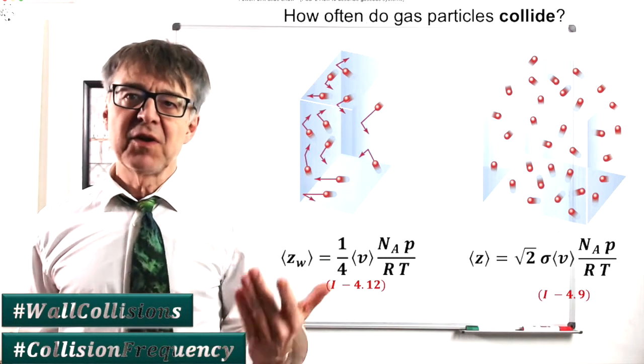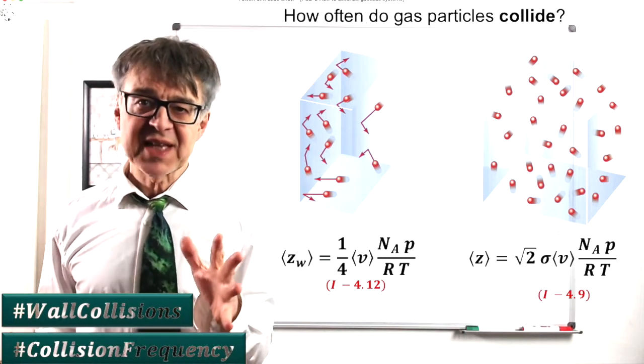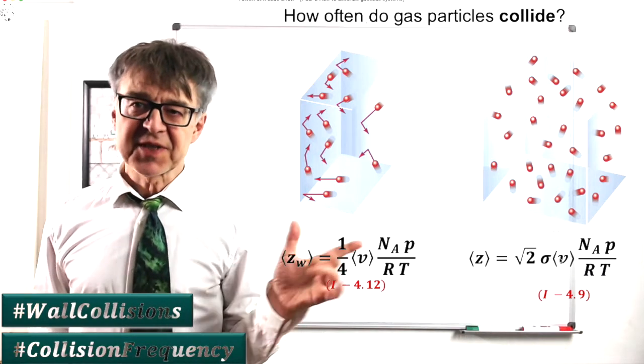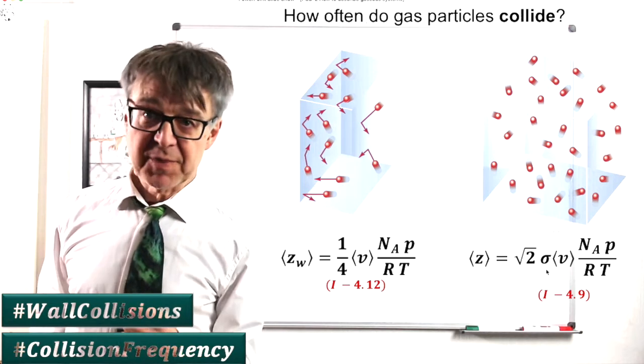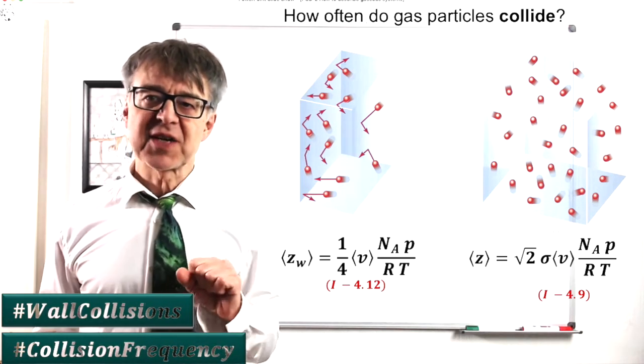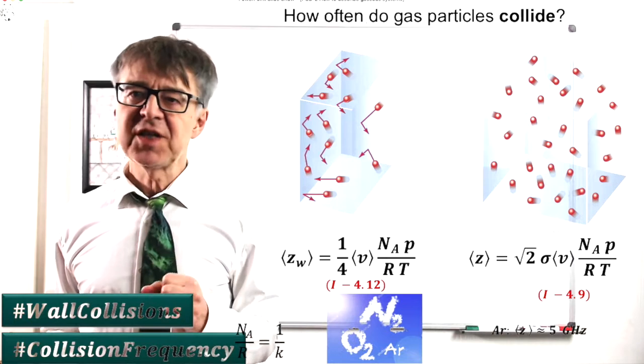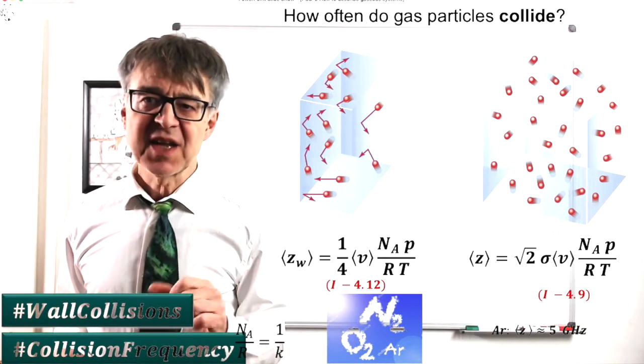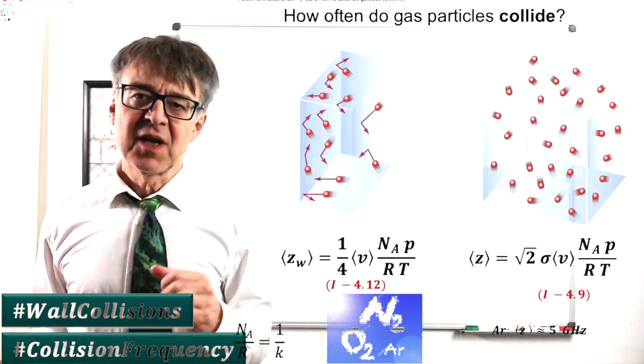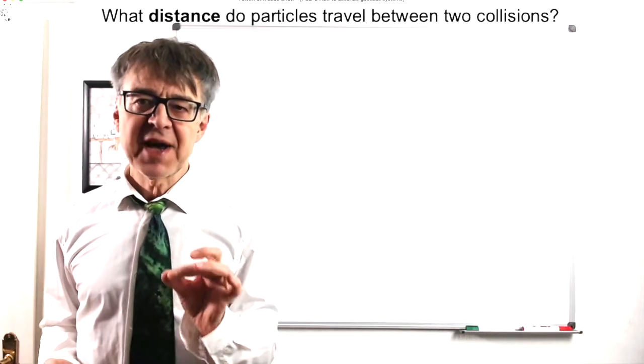The frequency of the collisions of a gas molecule with other gas molecules can be calculated by this equation. Sigma is a measure for the bulkiness of a particle and is called reaction cross-section. An argon atom, for example, collides 5 billion times per second with other gas particles. A collision frequency of 5 GHz.